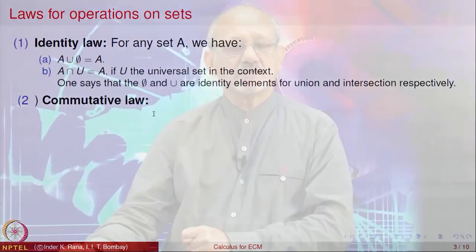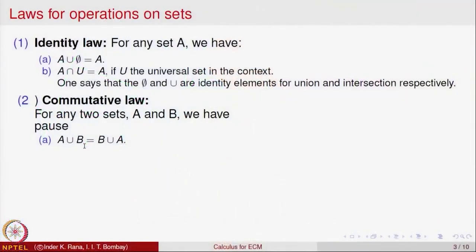The commutative laws for set operations are as follows. For any two sets A and B, A union B is the same as B union A. To form A union B, you pick up the elements of A and the elements of B and put them together in one set. Whether you take elements of A first or B first does not matter. Similarly, A intersection B is the same as B intersection A — what is common between A and B is the same as common between B and A.